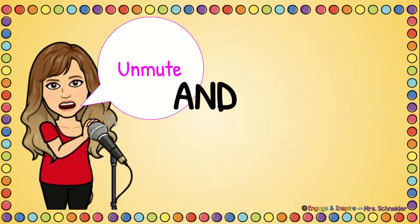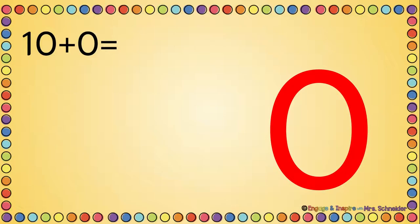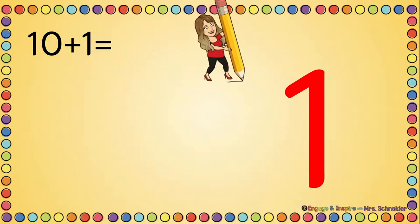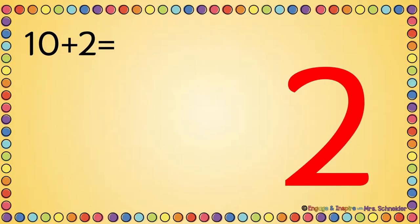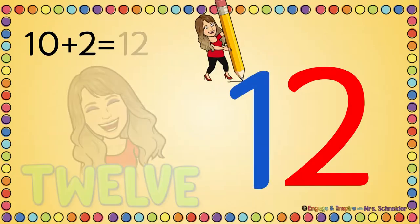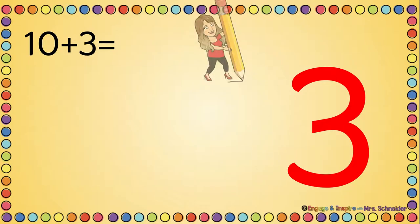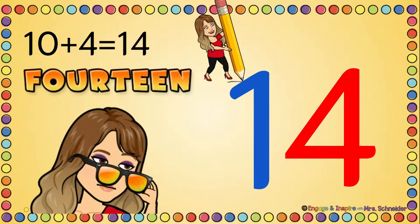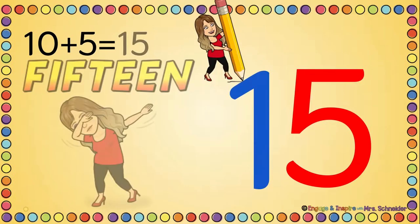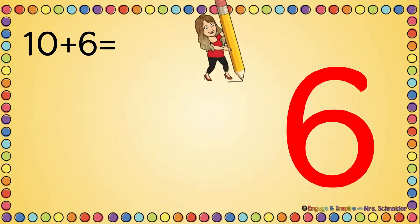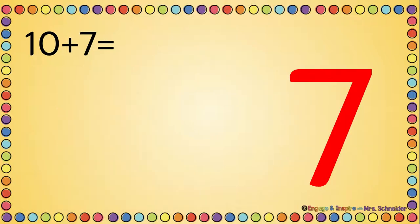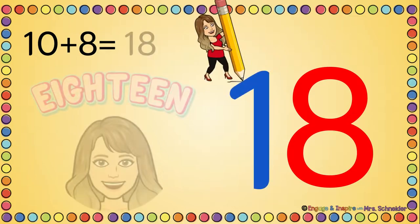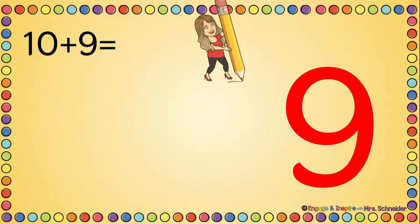Unmute and say the answer. 10 plus 0 is 10. 10 plus 1 is 11. 10 plus 2 is 12. 10 plus 3 is 13. 10 plus 4 is 14. 10 plus 5 is 15. 10 plus 6 is 16. 10 plus 7 is 17. 10 plus 8 is 18. 10 plus 9 is 19.